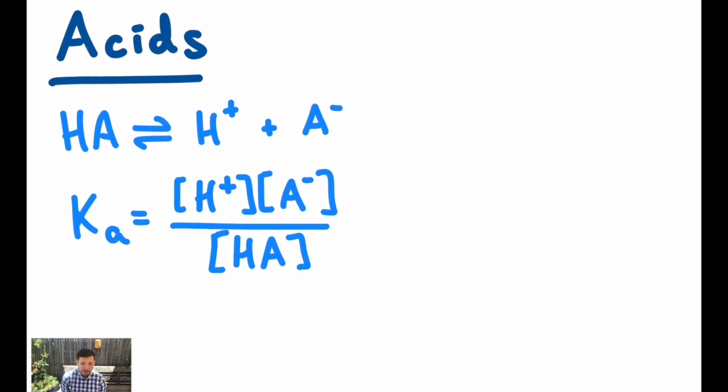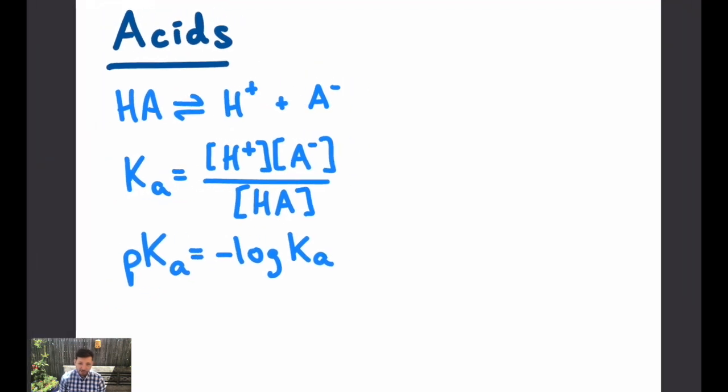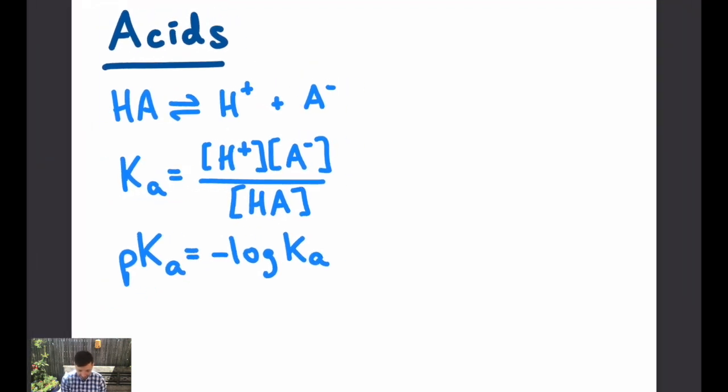For weak acids this is a pretty small numerical value because this dissociation doesn't happen to a significant extent. We quantify this differently by using what's called a pKa, that's just the negative logarithm of the Ka value and that gives us easier numbers to look at. Instead of 10 to the negative 5 for a Ka value we could consider a pKa of just 5, and then it's easier to compare pKa's with each other.